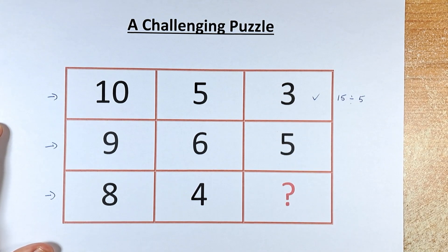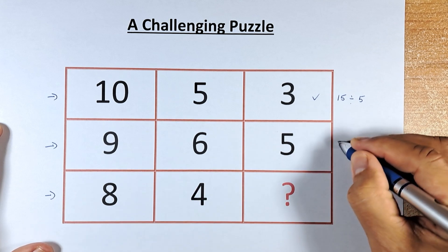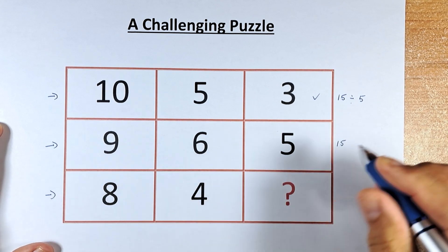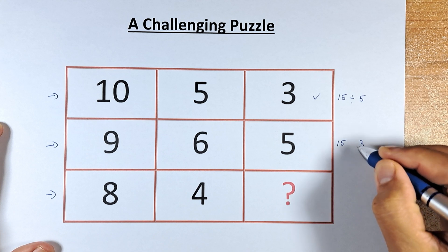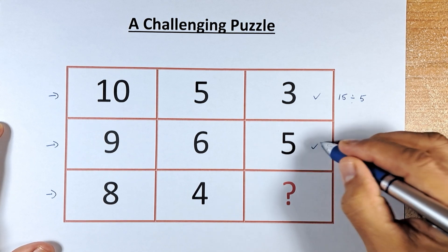Similarly, in the second row, we're going to add 9 plus 6. Again, it's going to be 15. And then 9 minus 6 is 3. And then you divide 15 by 3, and the answer is 5.